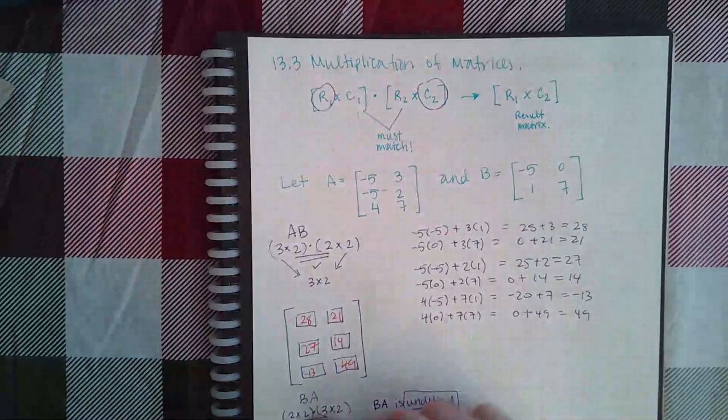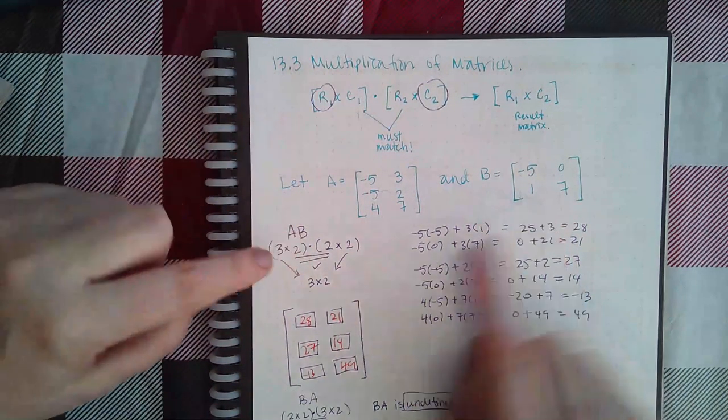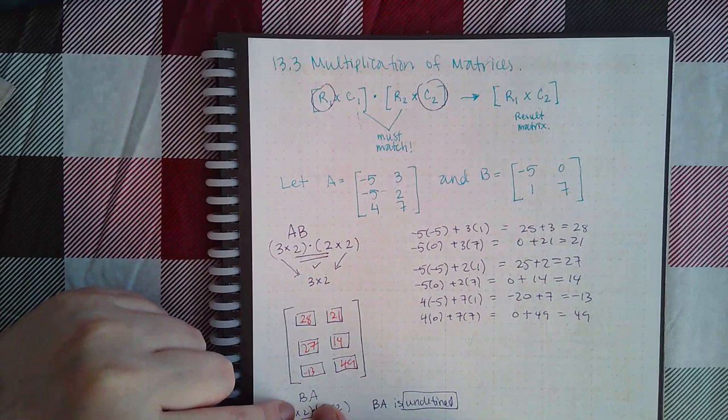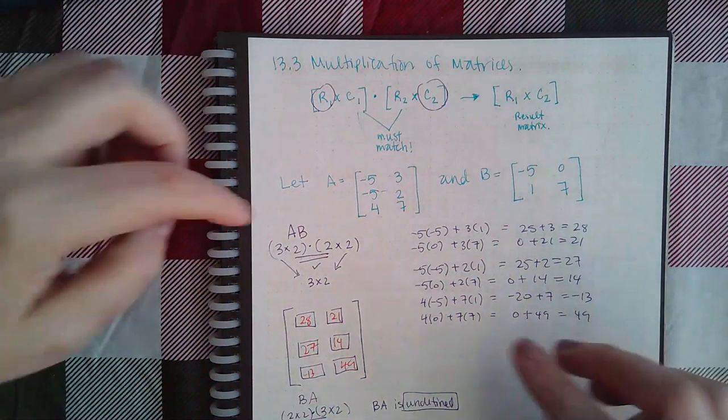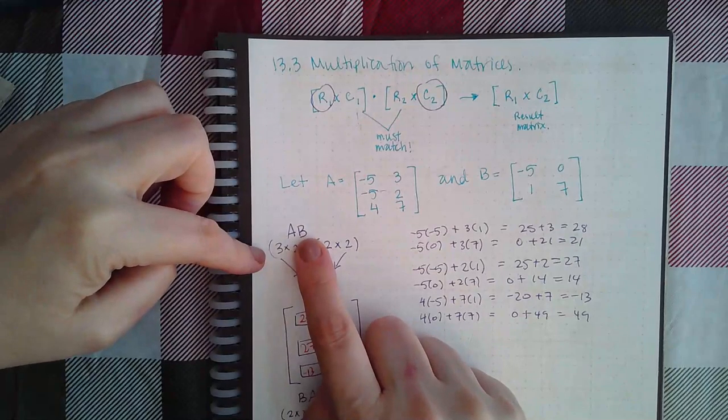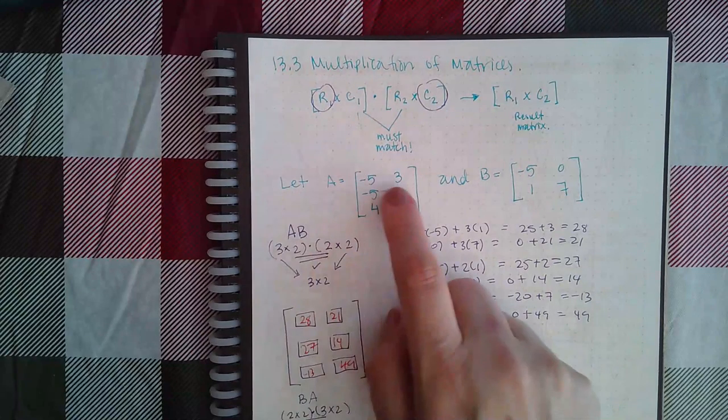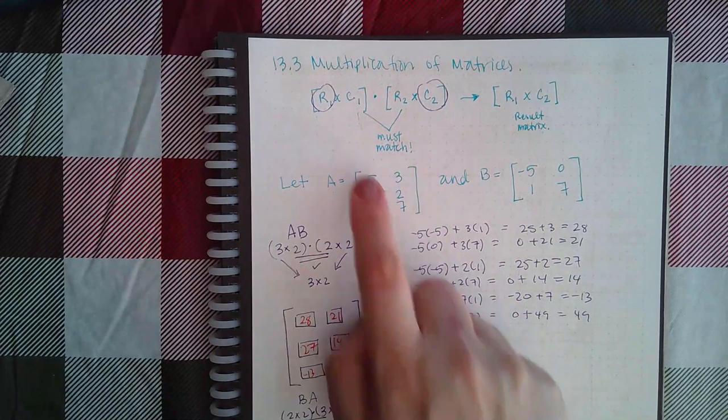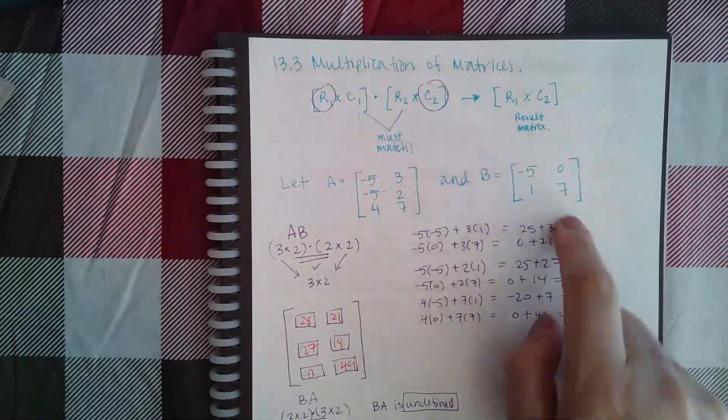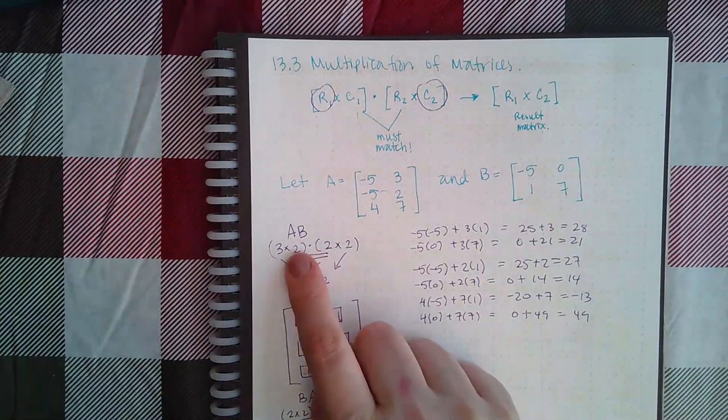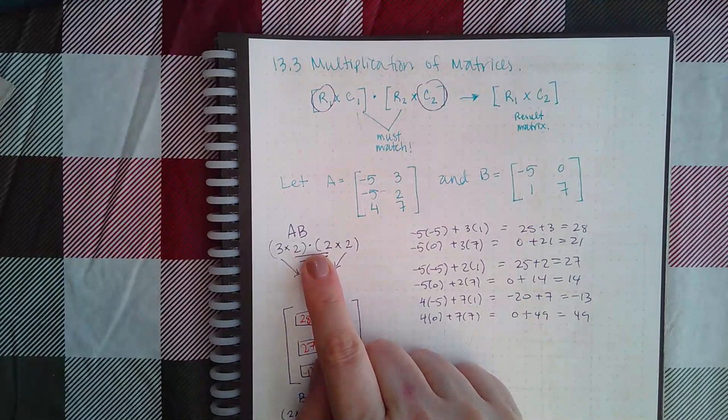So I've got a matrix A and a matrix B here, and I'm going to do both multiplications: A times B and B times A. I'll show you what you write when you do these together. For A times B, I'm going to write the dimensions. So A has three rows and two columns, so it's three-by-two. And B has two rows and two columns, so it's two-by-two. The two dimensions on the inside do match, so this multiplication can be done, and the result is going to be a three-by-two.